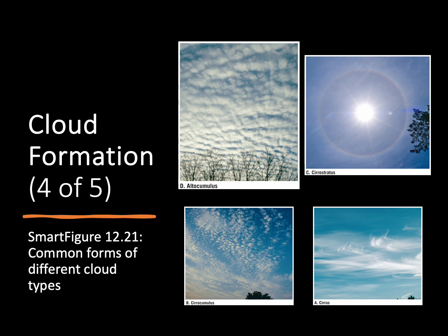Now we're going to look at actual photos of these different types of clouds. Starting with D, these are our altocumulus clouds — alto tells us it's a middle elevation, and we can see these little cotton balls of cloud. Over at C, we have cirrostratus: high, sheet-like clouds that generally form around our sun. Down at B, we have cirrocumulus — really high globular clouds, much higher in elevation than the altocumulus. And finally at A, we have our cirrus clouds — very high elevations with those wispy, ribbon-like appearances.